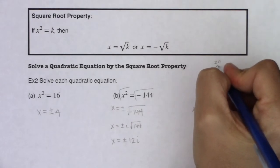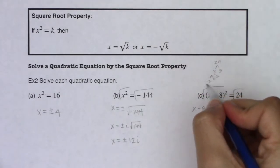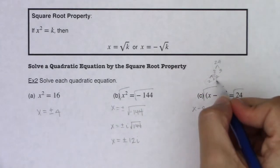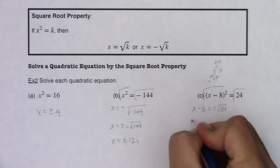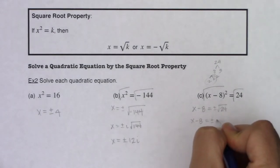Now with 24, we can break that down into 8 and 3 and 8 goes 2, 2, 2. So I have a pair of 2's and I have 2 times 3 left under the radical. So this is going to be x minus 8 is going to be equal to plus or minus 2 root 3.